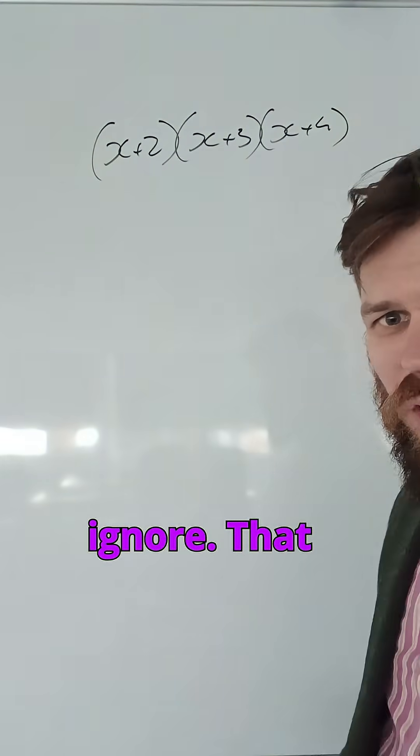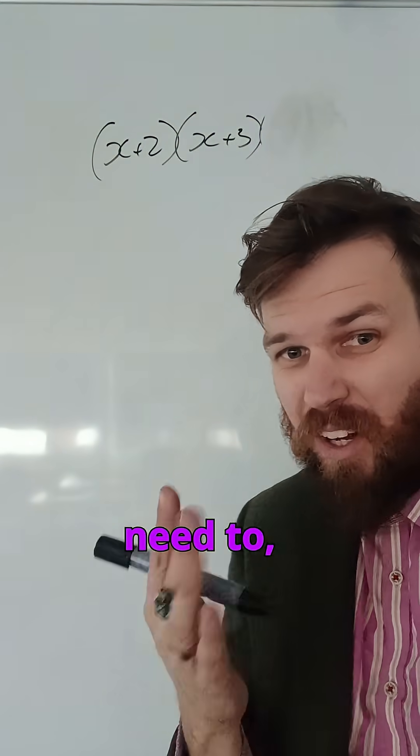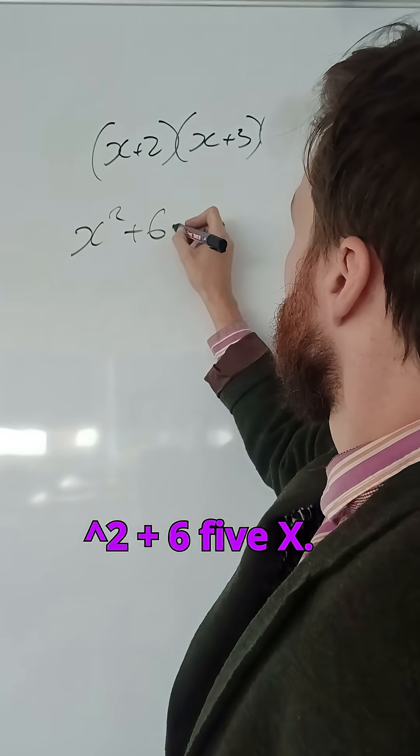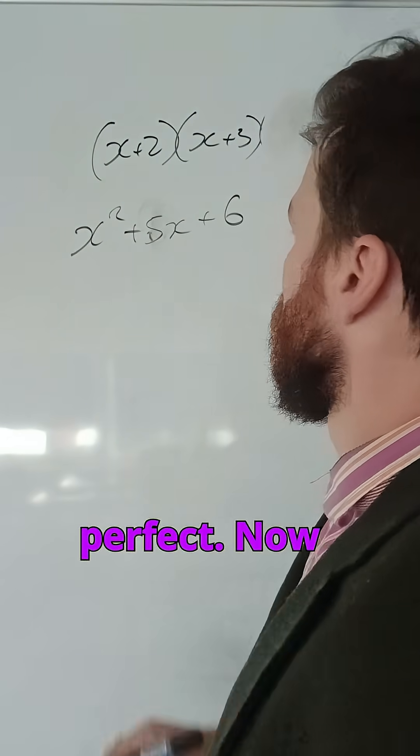But the first thing is, I'm going to just ignore that last part. Cross that on your paper if you need to, right? I'm going to do this first bracket expansion. So I'm going to end up with x squared plus 5x plus 6. Okay, perfect.